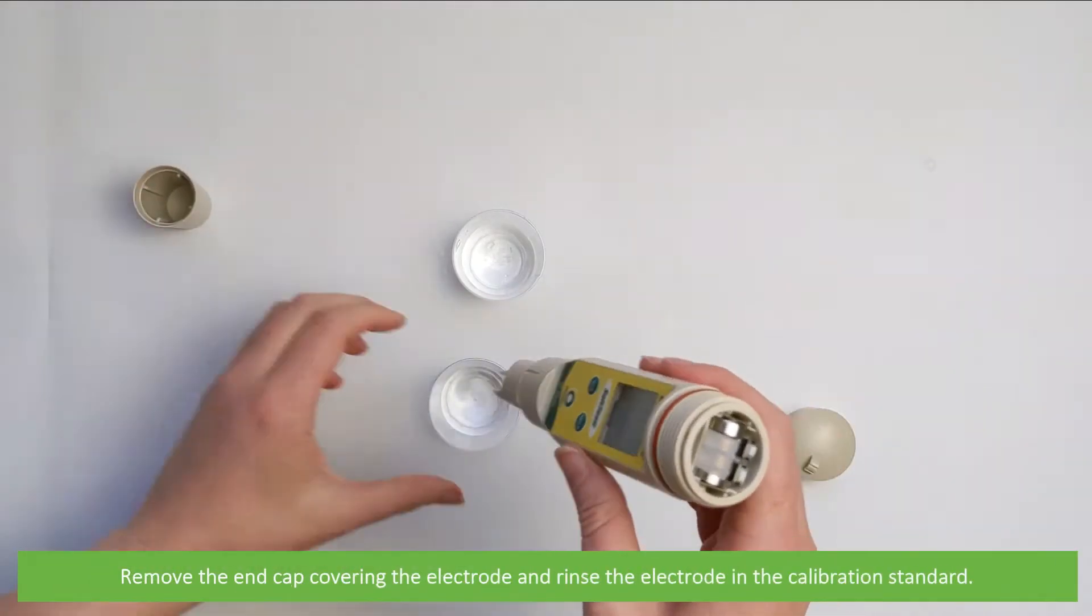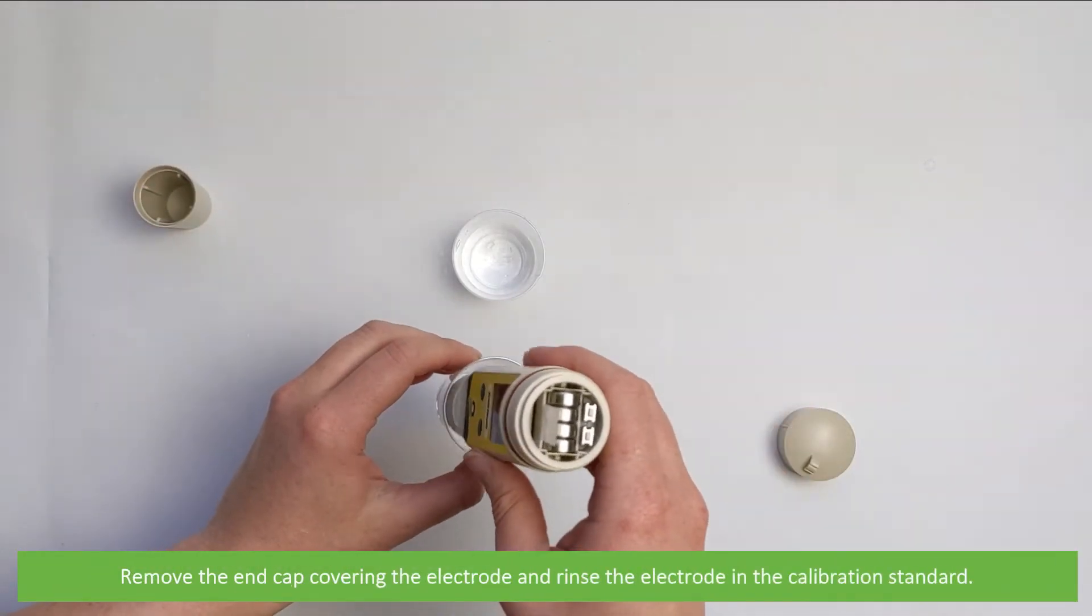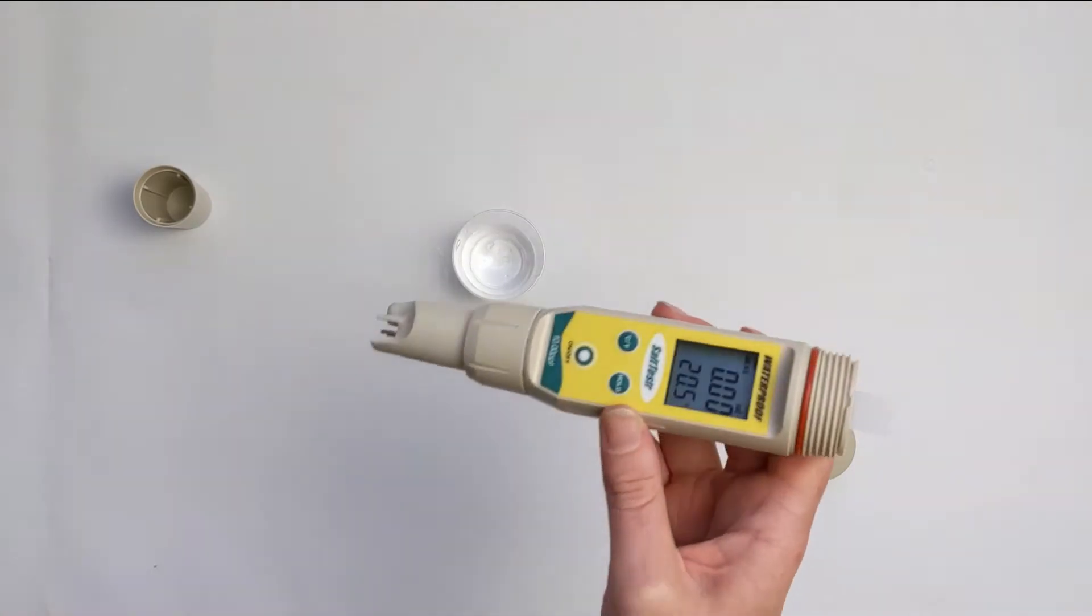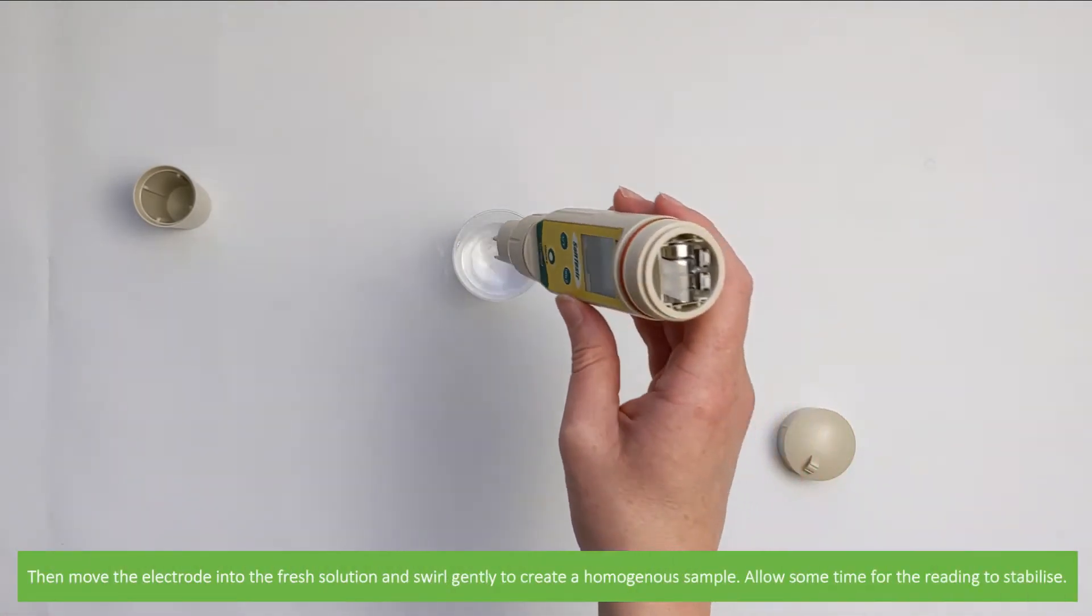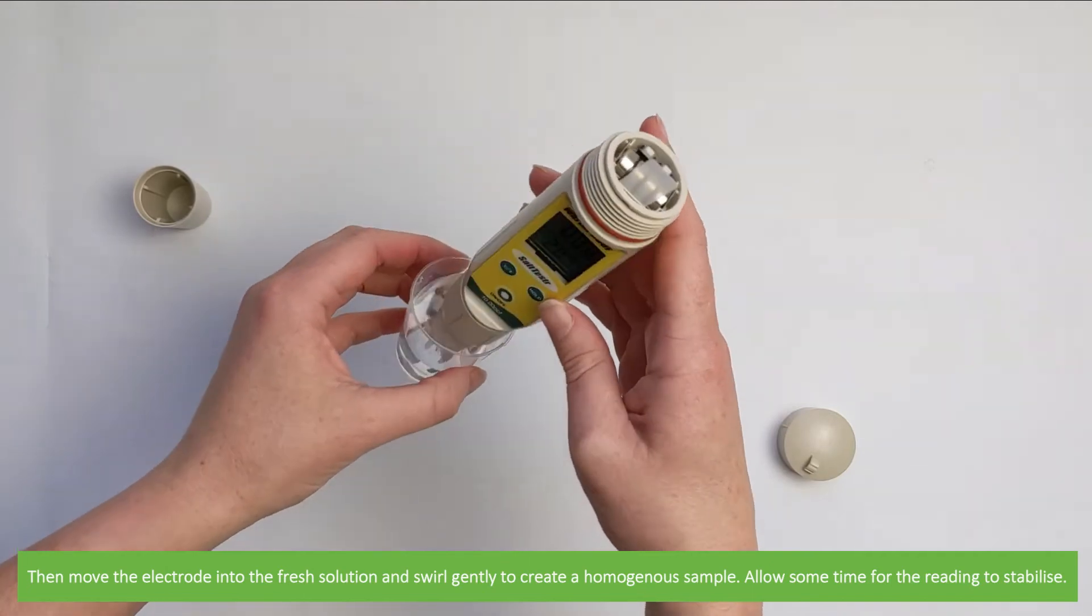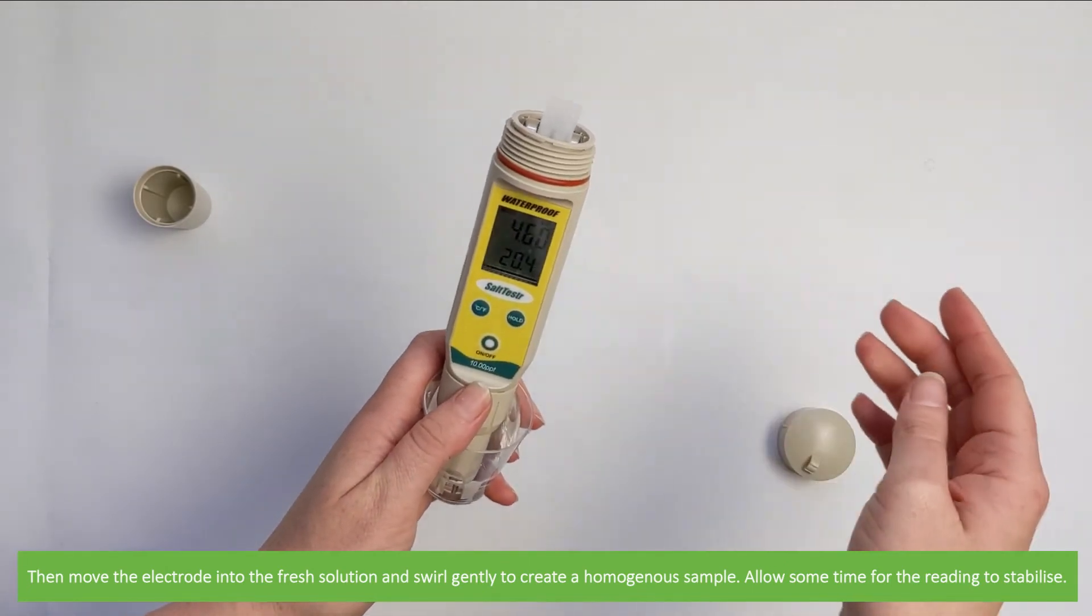Remove the end cap covering the electrode and rinse the electrode in calibration standard. Then move the electrode onto the fresh solution and swirl gently to create a homogenous sample. Allow some time for the reading to stabilize.